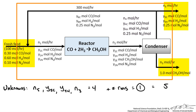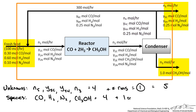We also subtract any relationships we know — in our purge stream the mole fractions must add up to 1, giving us 1 relationship. So we have 5 unknowns and 5 equations, giving us 0 degrees of freedom, and we can solve this problem.